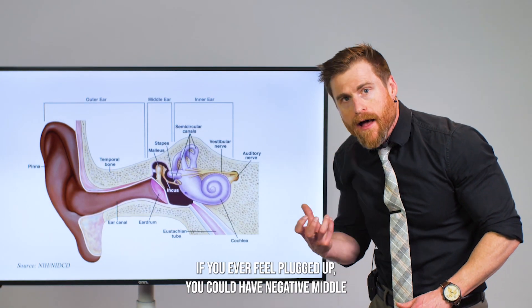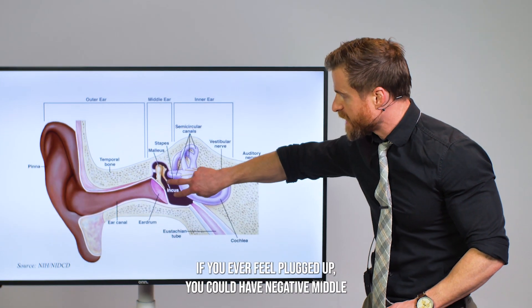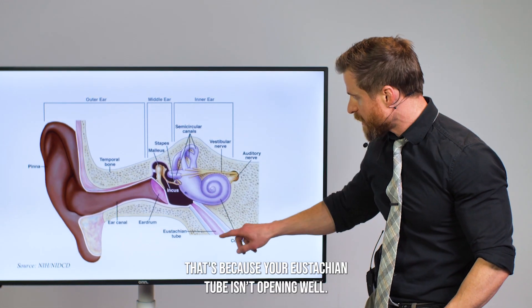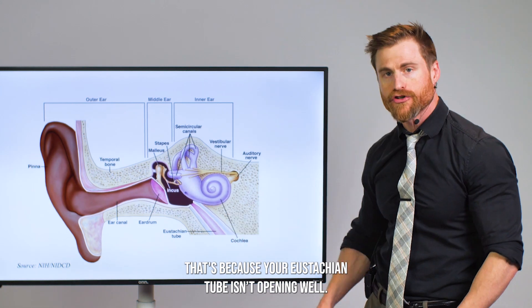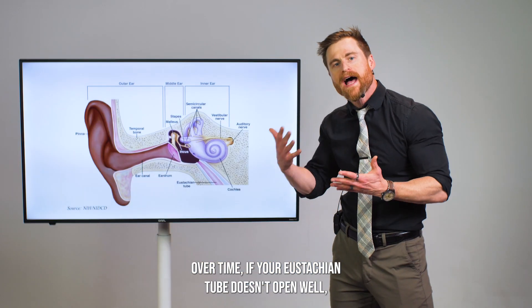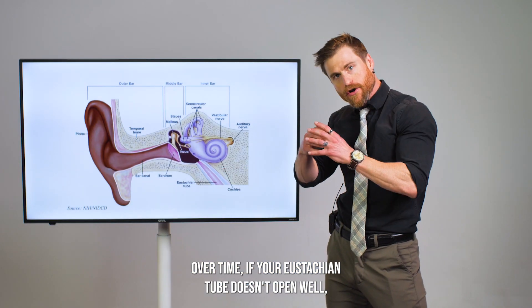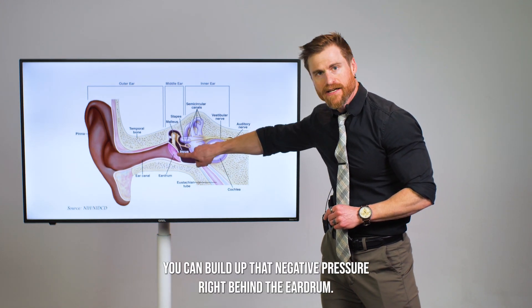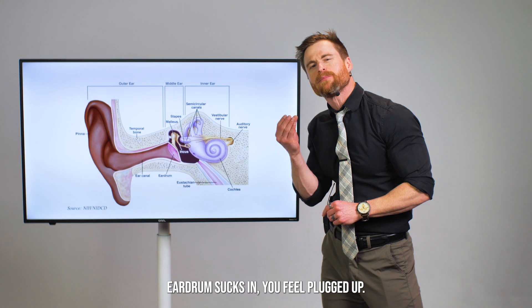If you ever feel plugged up, you could have negative middle ear pressure where your eardrum is sucked in. That's because your eustachian tube isn't opening well. Over time, if your eustachian tube doesn't open well, you can build up that negative pressure right behind the eardrum. The eardrum sucks in and you feel plugged up.